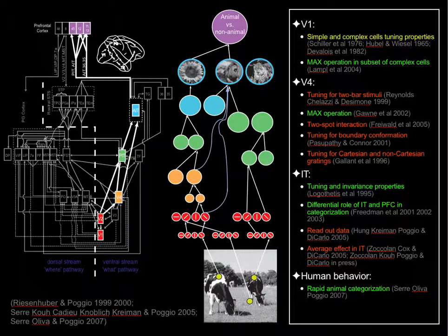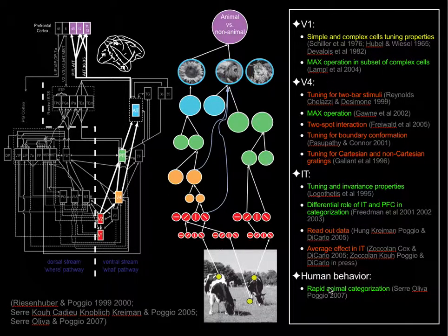This diagram, borrowed from Thomas Serre, a colleague at Brown and one of the major experts in this area, shows one of the models we're going to use heavily in this course — a model of how our brain and the ventral pathway might understand and categorize objects in a visual scene. It briefly describes visual areas V1, V2, V4, inferotemporal cortex, and prefrontal cortex, and tells you how visual information is processed in the human brain.